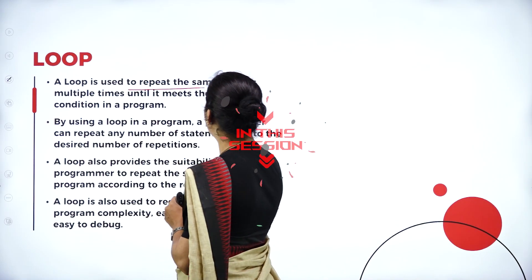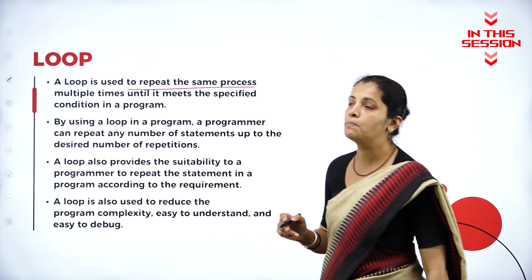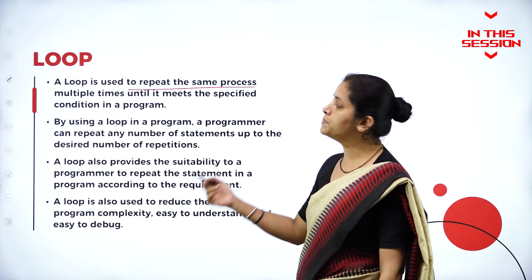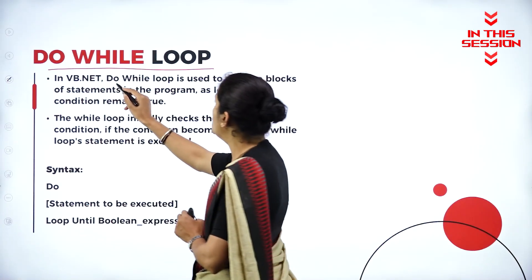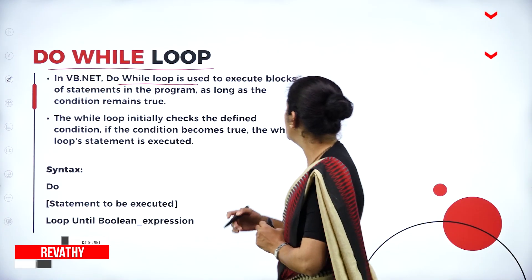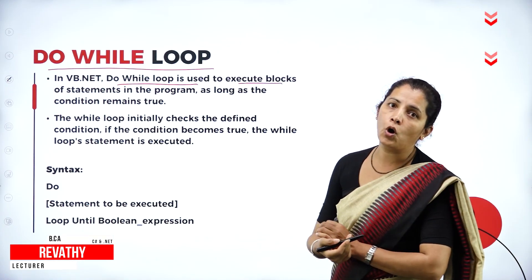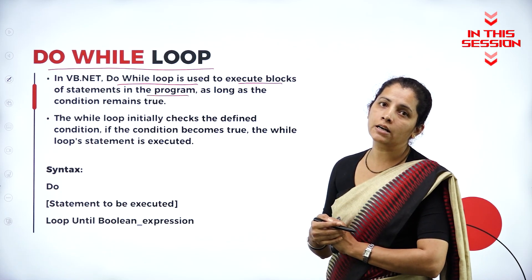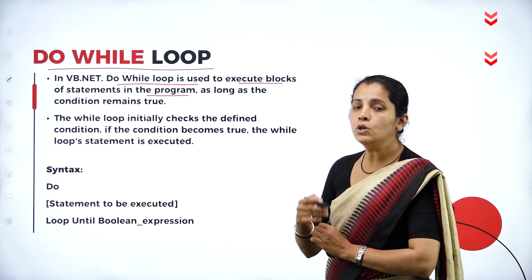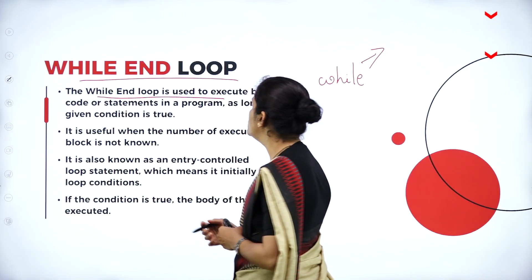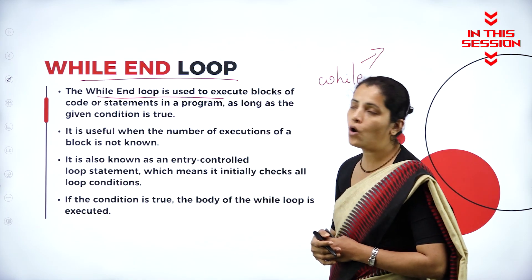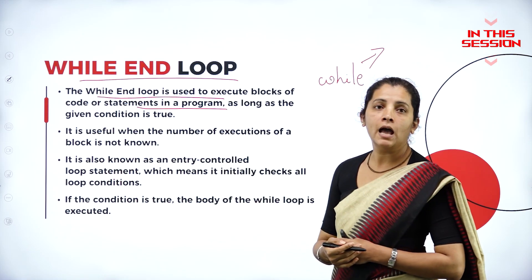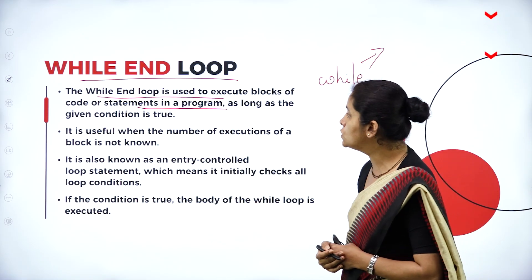A loop is used to repeat the same process multiple times until it meets the specified condition in a program. Do while loop is used to execute a block of statements in the program as long as the condition remains true. The while end loop is used to execute a block of statements in a program as long as the given condition is true.